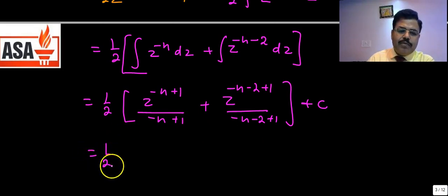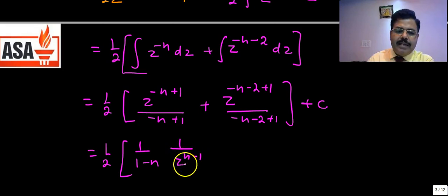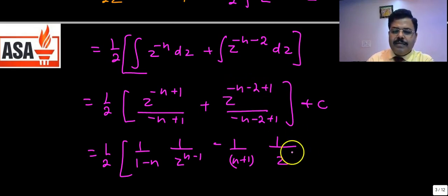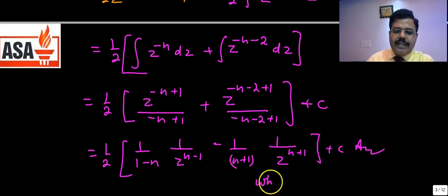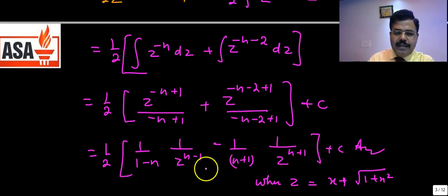The final answer can be written as (1/2) [ 1/((1-n)·z^(n-1)) - 1/((n+1)·z^(n+1)) ] + C, where z = x + √(1+x²). You can substitute back the value of z to express the answer in terms of x.